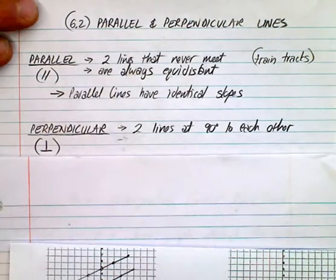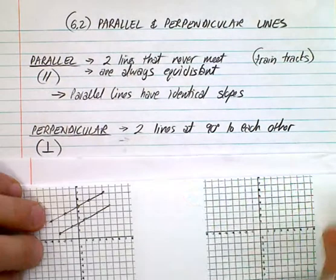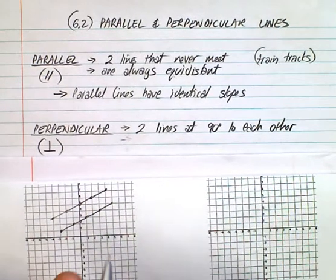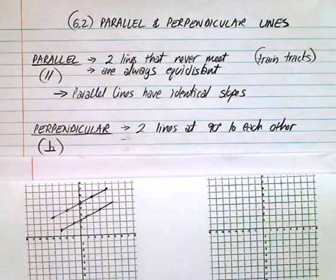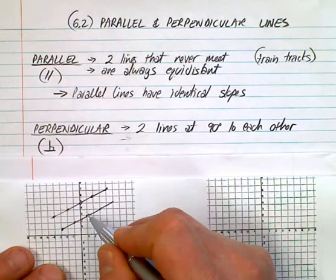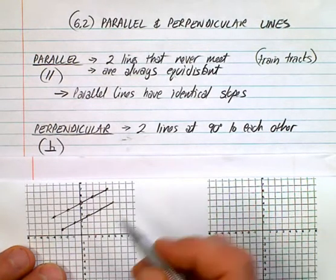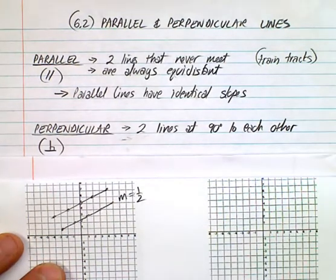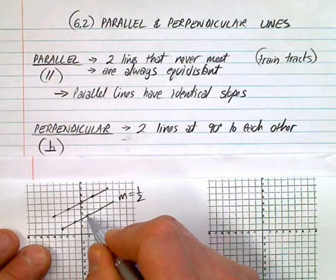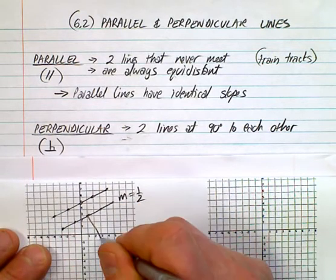Perpendicular lines, on the other hand, are two lines that are 90 degrees to each other. This is the symbol we use — that box indicating a right angle, not sort of a right angle, it is a right angle. What would be a perpendicular line to this one here? If the slope is one half, what would be the perpendicular slope? It doesn't have the same slope, but it has a related slope.